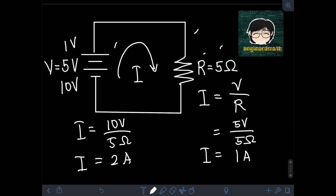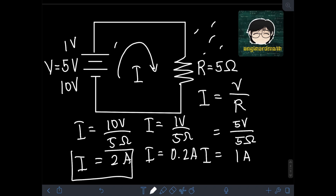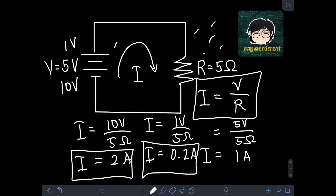Let's try to change the voltage again, let's say to 1V, and retain the value of the resistance R at 5Ω. Therefore, we can have a new current I as 1V divided by 5Ω, or current is equal to 1/5 A, or 0.2A. As you can see in this example, when we increase the value of the voltage within a circuit while keeping the resistance constant, we get a higher current. While if we decrease the voltage in a circuit keeping the resistance constant, we get a lower current flowing through the circuit. This is illustrated in the form of the equation for Ohm's Law: the current I is directly proportional to the voltage V, where 1 over R is the constant of proportionality.